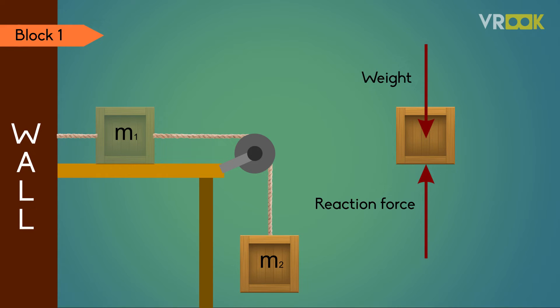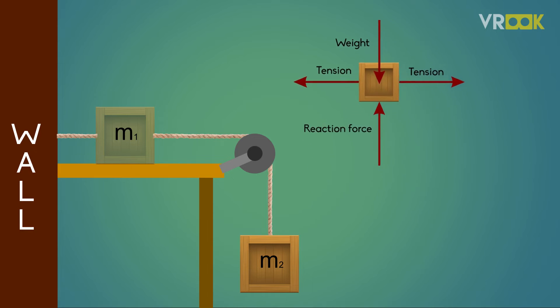Now as there are two strings attached there will be a tension. We write those two forces as tensile forces acting on the block. Both the strings will try to pull the box apart, so the direction of the tensile forces are away from the block. This is the FBD of block 1.